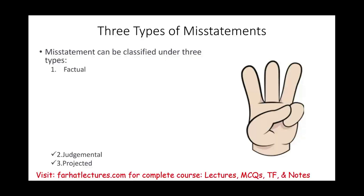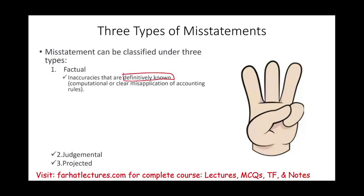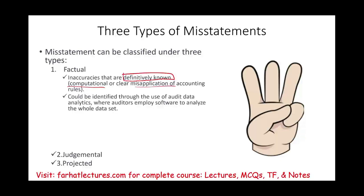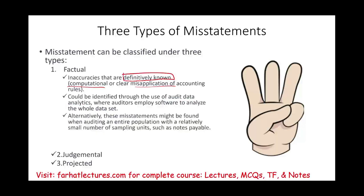What are factual misstatements? Those are inaccuracies — incorrect things that are definitely known, so no one will argue about them — like maybe a computational error or clear misapplication of accounting rules. How do we find those factual misstatements? They can be identified through the use of audit data analytics, where we employ software to analyze the whole data, and as a result we find some computational error.